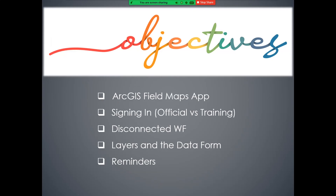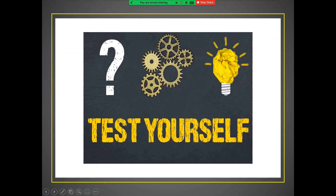We've covered a lot today: the app itself, signing in, the disconnected workflow, the two layers, the activity table for the monitor points layer, editing techniques, data forms, and a list of reminders and warnings. Please don't forget the quiz — go ahead and take advantage of that to confirm you got what you needed from today's lesson.